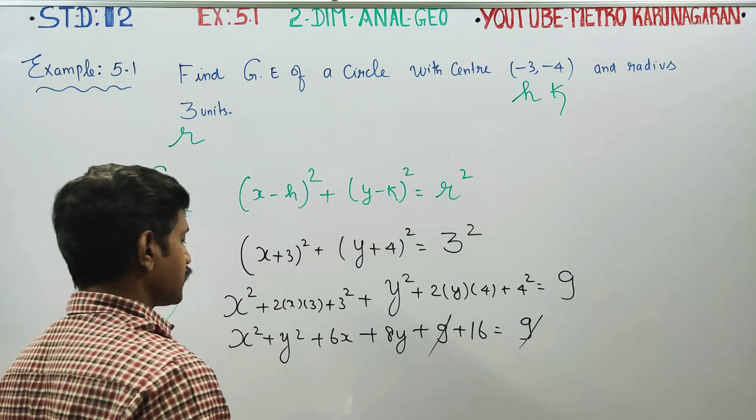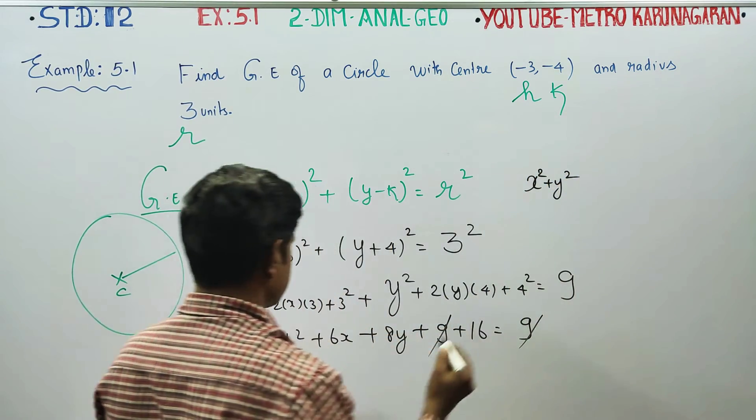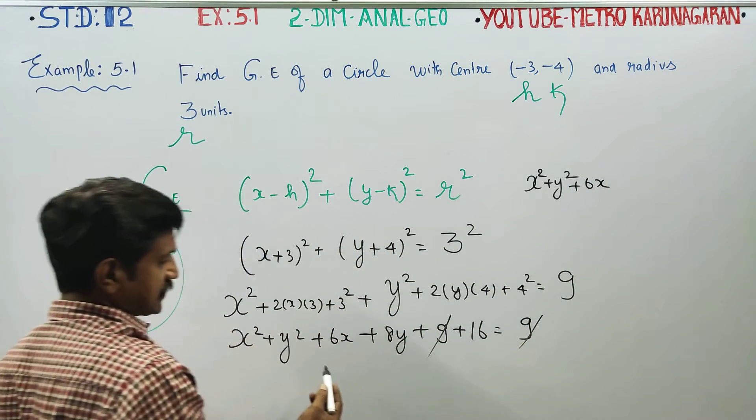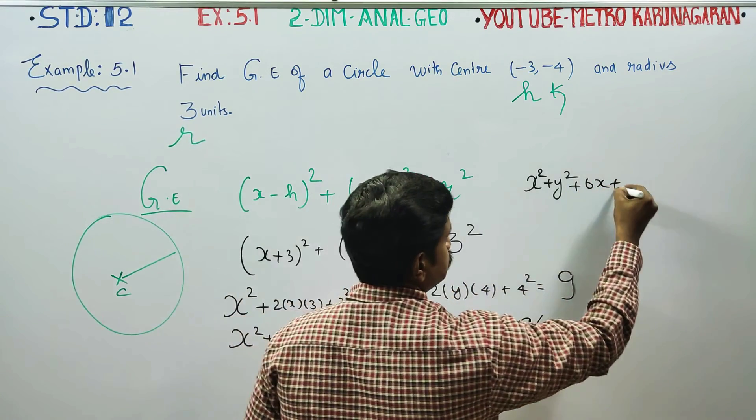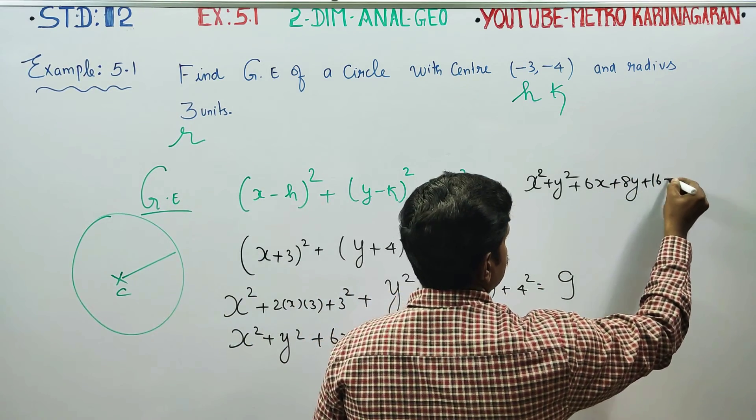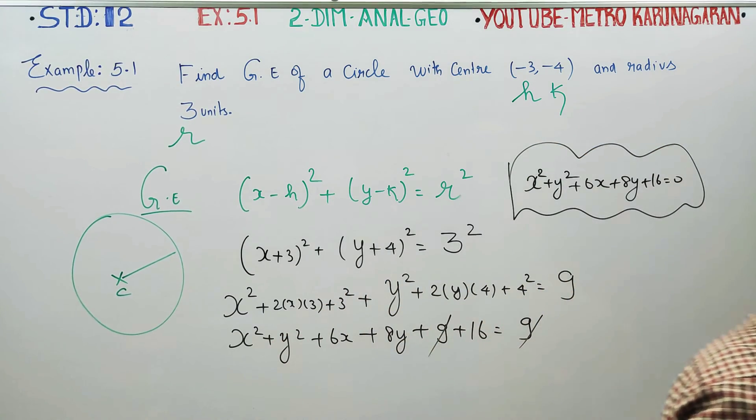Moving 9 to the other side, therefore your answer will be x² + y² + 6x + 8y + 16 = 0, which is the equation of the circle. Okay, thank you.